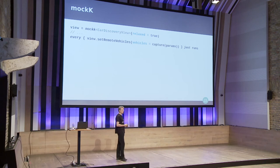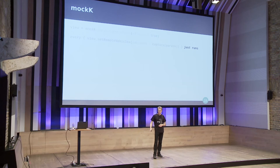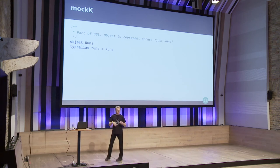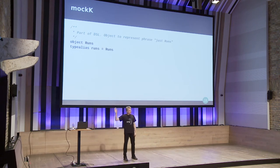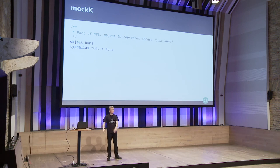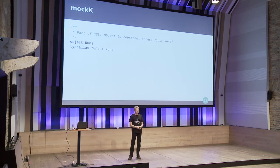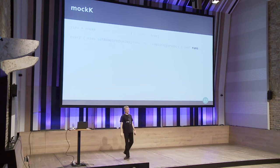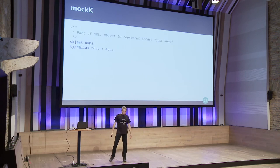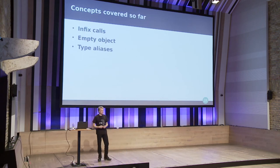Looking at the same MockK sample again, `runs` is just an empty object — no members, no methods, no functions, nothing. It was created solely to allow this syntax. There's even a type alias defined so that you can use a lowercase `r` version. The only reason this was created was to make the infix call possible. Without it, you'd have to write `.just(runs)` with empty-feeling parentheses. So we've covered empty objects and type aliases as DSL building blocks.